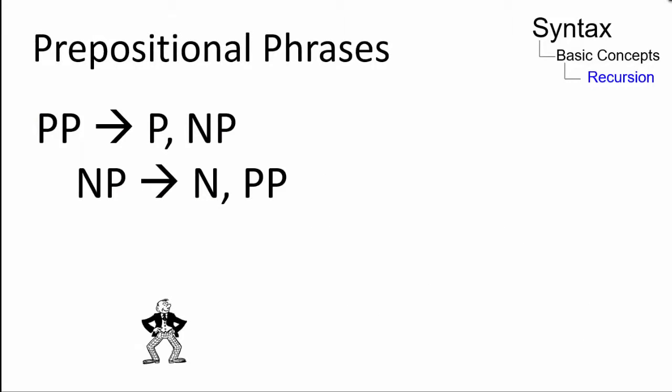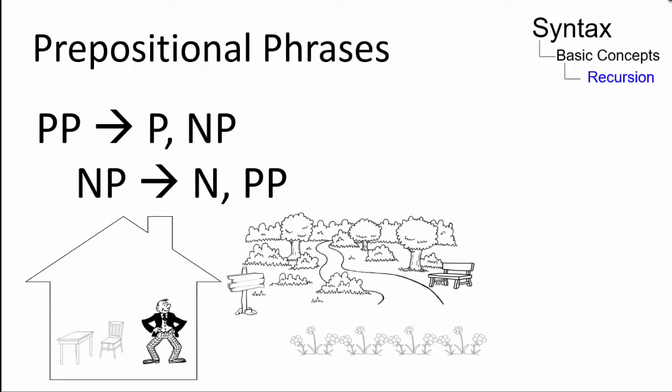Prepositional phrases also lend themselves to recursion. Jack can be sitting on the chair, at the table, in the house, by the park, in the town, with the garden, next to the lake, and so on.